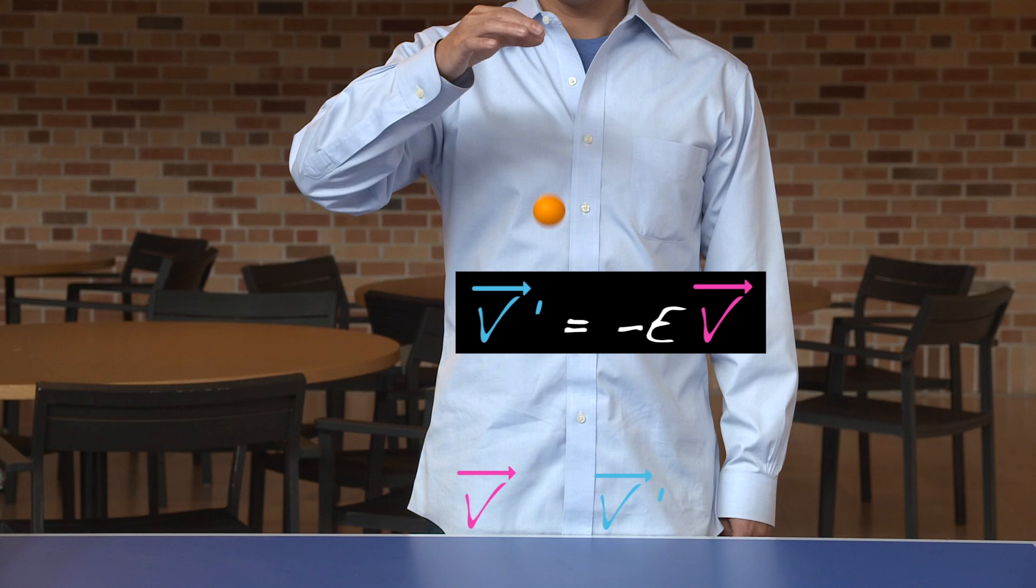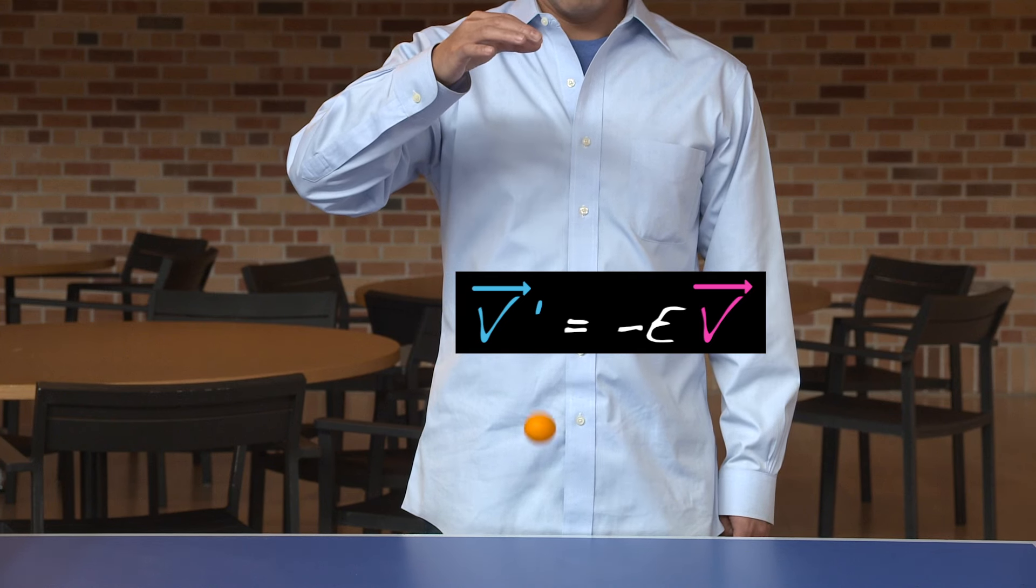And the minus sign indicates the direction reverses after the collision. If e equals one, the collision is perfect and no energy is lost. If e is less than one, then some energy will be lost.